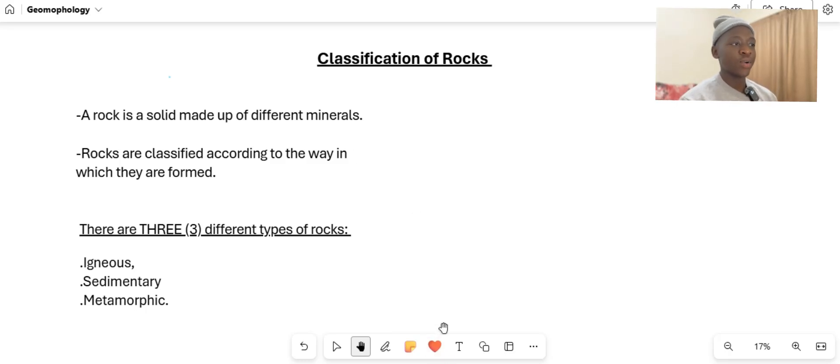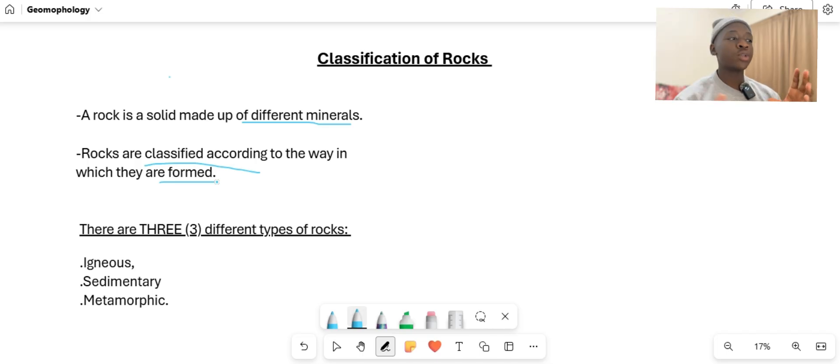Good day, my day great times. Today we're here to learn about the classification of rocks. We are into the topic of geomorphology. First and foremost, we're going to learn how a rock is formed. A rock is formed from different minerals, and rocks are classified according to the way they are formed. We classify rocks by how they are formed, the process of formation of the rocks.